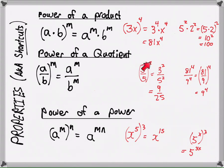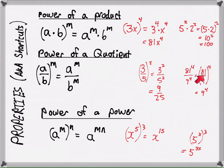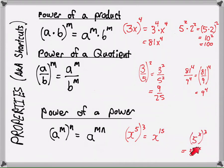Power of a quotient: you can distribute the exponent into a fraction. If you have three fifths squared, just square the 3 and square the 5 — you get nine twenty-fifths. Or if you have 81 to the fourth over 9 to the fourth, since they're the same power, you can reverse the power of a quotient: make that (81/9) to the fourth, which is 9 to the fourth. Finally, power of a power: you multiply the exponents. Three sets of x to the fifth make a total of 15 factors of x. Five to the X raised to the third makes 3X total factors of five.